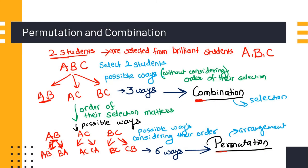Now, what is permutation and combination? Suppose you have a group of three brilliant students A, B, C, and you have to select two students from that group. No order information is given. So you simply choose two persons at a time: you can choose A and B, or B and C, or A and C — giving three ways in total. Here you are calculating possible ways without considering any order, meaning which student was picked first or second does not matter. This is called combination — it's a kind of selection.